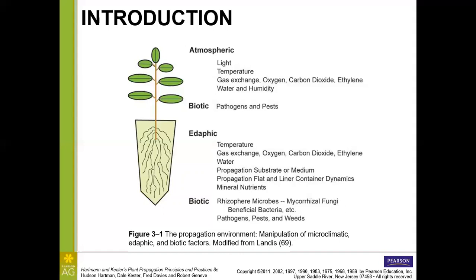Here they have atmospheric involving gas exchange, but you'll also notice that gas exchange with oxygen is also included below ground under the edaphic factors. Carbon dioxide can have a fertilizing effect, and this is important for young plants as well as for our larger mature plants. So we want to control ethylene. Ethylene is responsible for ripening — in the right conditions it can be beneficial.